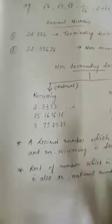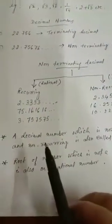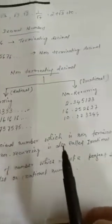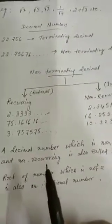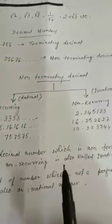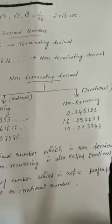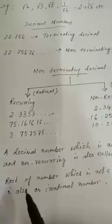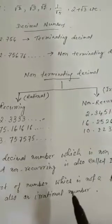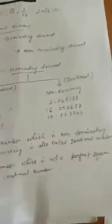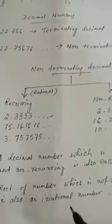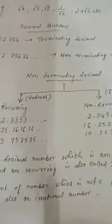Therefore, a decimal number which is non-terminating and non-recurring is an irrational number. Also, the square root of a number that is not a perfect square is also an irrational number.